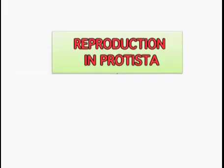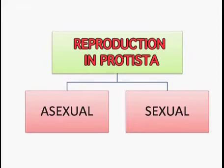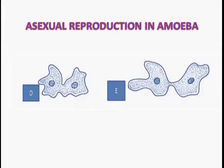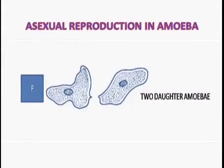Just like in Monerans, reproduction is either sexual or asexual. Asexual reproduction takes place by binary fission. The nucleus divides first, followed by the cytoplasm. A constriction — a furrow — appears in the middle, as you can see in the diagram, which deepens and ultimately two amoebae are formed.